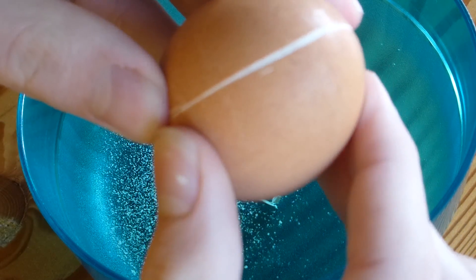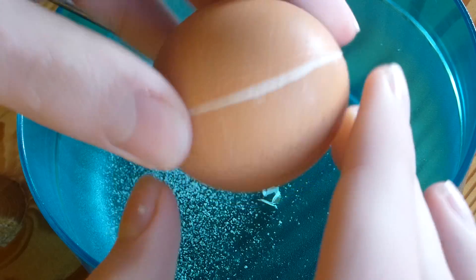Okay, so you're going to file a line on the egg until you've got a line running all the way around the egg, and you can gently twist the egg and you can feel a little bit of movement.